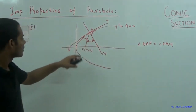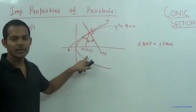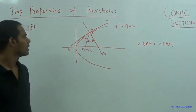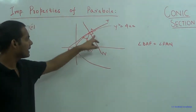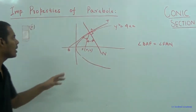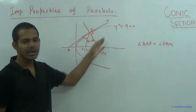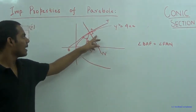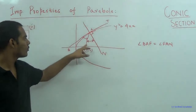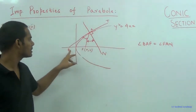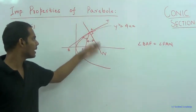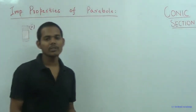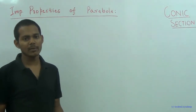Here, point F is the focus, A is any general point on the parabola, and line AF goes from A to the focus. The angle on one side equals the angle on the other side, illustrating the angle bisection property. Now let us move on to the elaboration of the second property of the parabola.